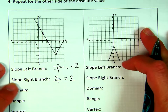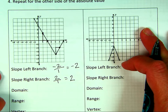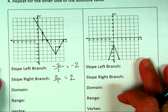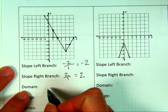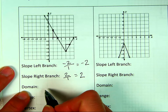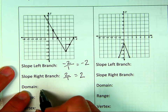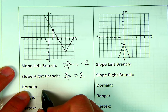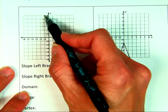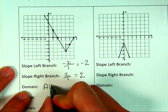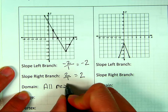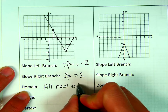We're just going to discover some things about these two graphs. The domain — all the possible x values — you ask yourself: does it go left and right forever? Since there's an arrow going to the left and an arrow going to the right, my domain is all real numbers, because there's never a time where it stops going left or stops going right.